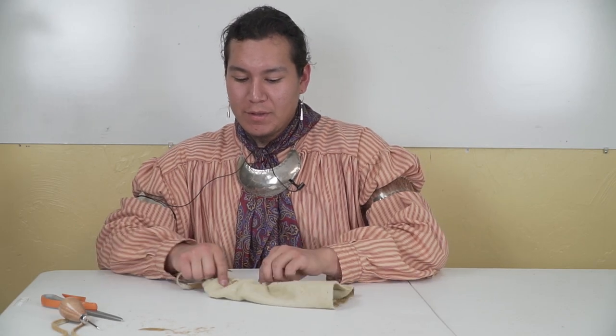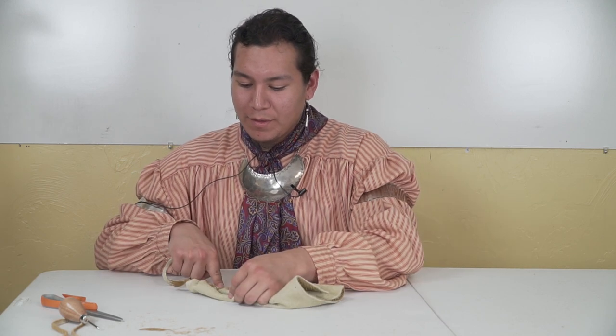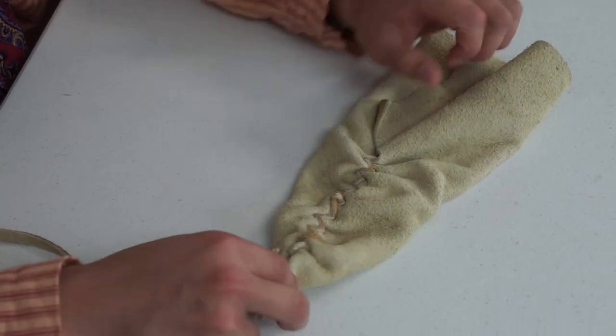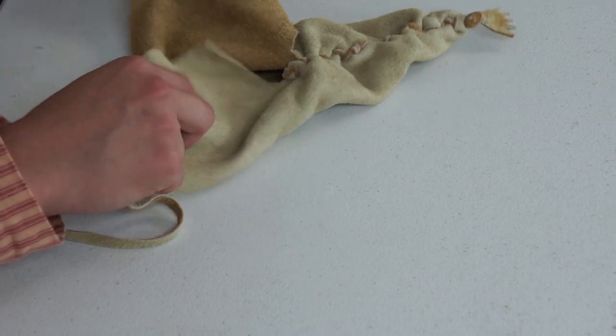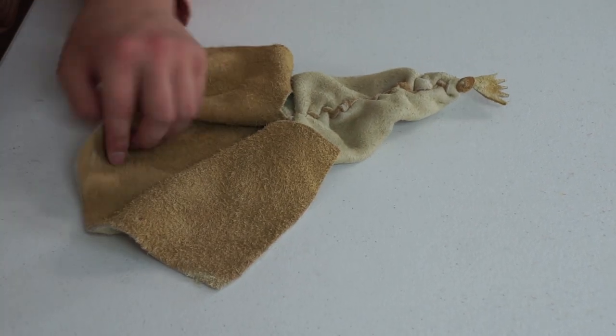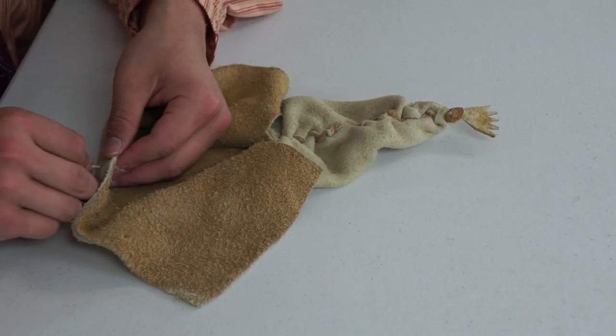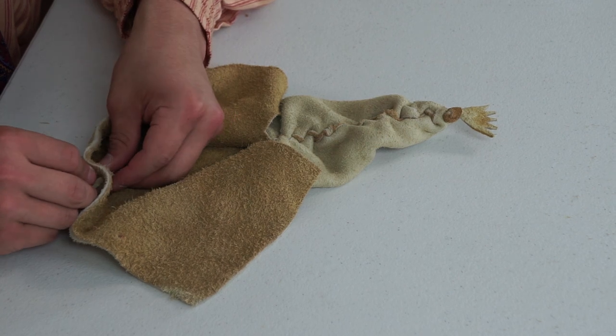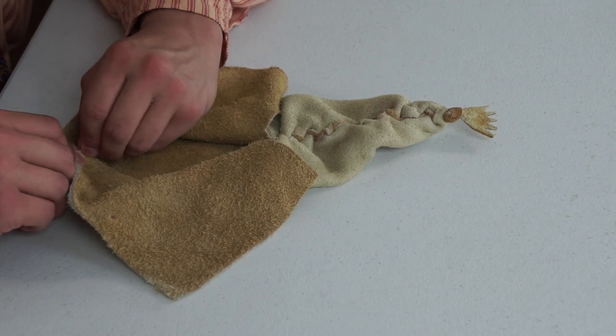All right. So now that we have the front part done, you can see where we have our zigzag pattern, and we've got that pucker shape. And now we're going to move on to the back side. And we're going to do it the same way. So you just pull that through.